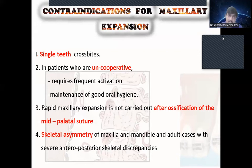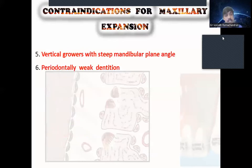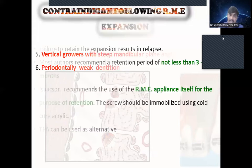If we need skeletal change, we must use RME before mid-palatal suture ossification. The next contraindication is skeletal asymmetry of maxilla and mandible — if there is a skeletal asymmetry and we use these appliances, the asymmetry may worsen, making further treatment very difficult. Additional contraindications include vertical growers with steep mandibular plane angle and periodontally weak dentitions.